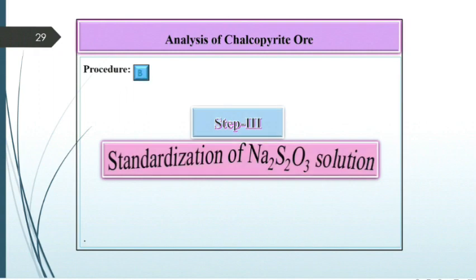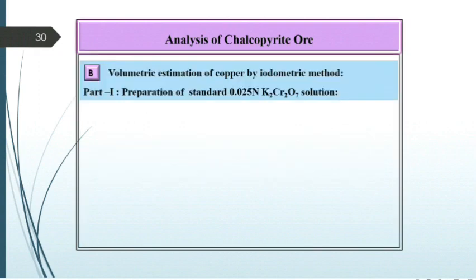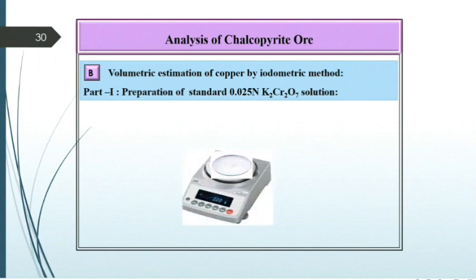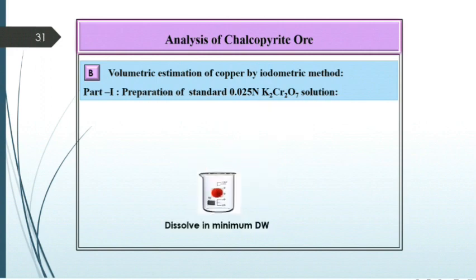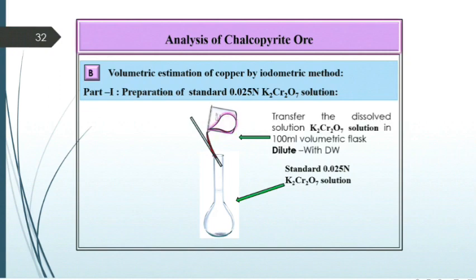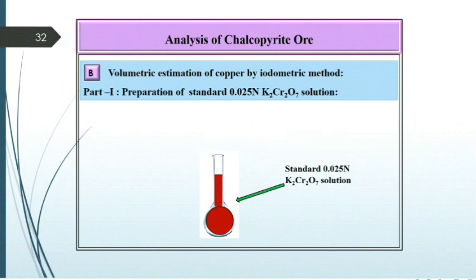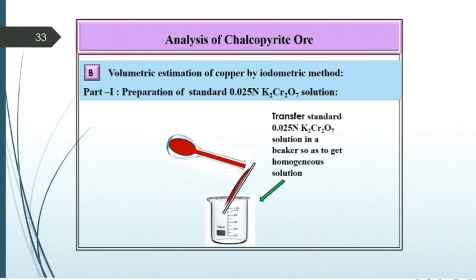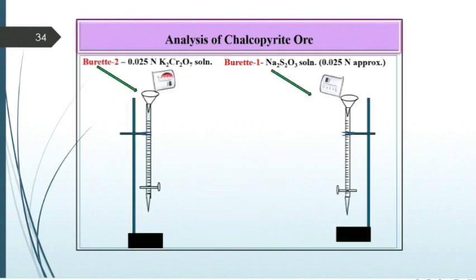Step 3 is the standardization of Na2S2O3 solution for the volumetric estimation of copper by the iodometric method. First, prepare a standard solution of 0.025 normal K2Cr2O7: weigh 0.1225 gram of K2Cr2O7 on a watch glass, transfer it into a beaker, and dissolve it in a minimum amount of water. Transfer this solution into a 100 ml volumetric flask and dilute it up to the mark using distilled water. Transfer this solution back into the beaker to get a homogeneous solution. Fill burette No. 2 with this 0.025 normal K2Cr2O7 solution and burette No. 1 with Na2S2O3 solution.